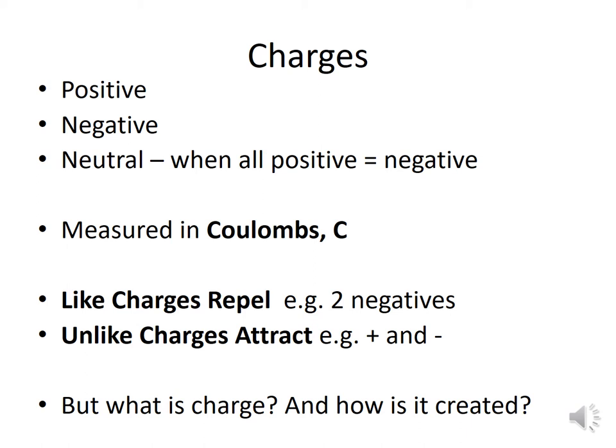So charges — what are they and what do we know about them? You can have two types of charges: positive and negative. Neutral is when there is no charge, or when all the positive charges cancel out all the negative charges — there is the same amount of both. The amount of charge is measured in a unit called coulombs, which we give the letter C. Like charges repel, so if you bring two negative charges together they will push away from each other, and unlike charges attract, so a positive and a negative will move towards each other.